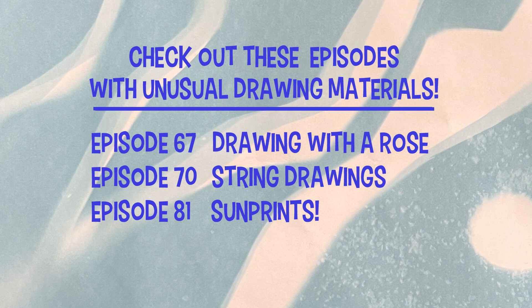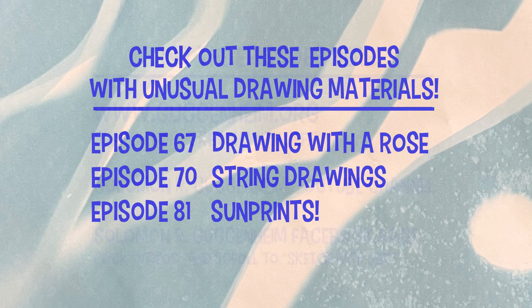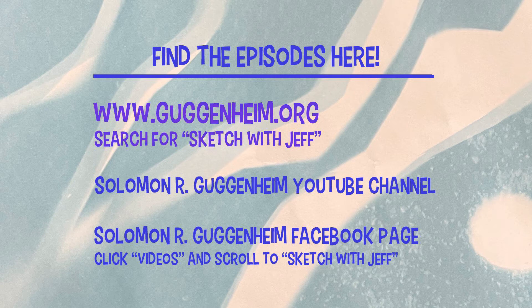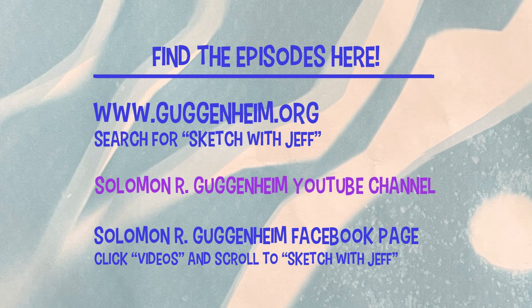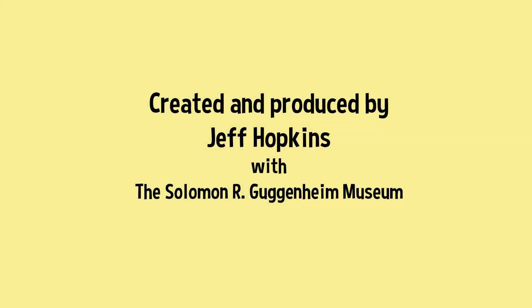And if you'd like to see the episodes that we mentioned here today, well here they are: Episode 67, 70, and 81. Where can you find them? Well a few different places. Just visit the Guggenheim Museum website and search Sketch with Jeff, or the Guggenheim Museum YouTube channel. And of course all the Sketch with Jeff videos are right there on the Guggenheim Museum Facebook page. No matter how you find them, well we love that you joined us. And Pencil will be back with more questions next month. We'll see you soon. Thanks everyone.